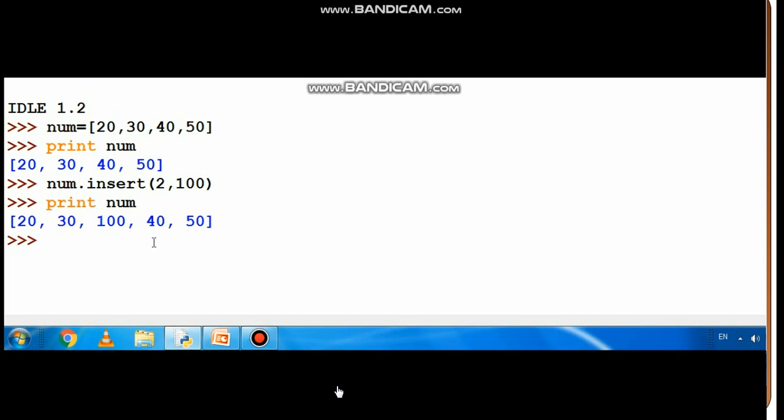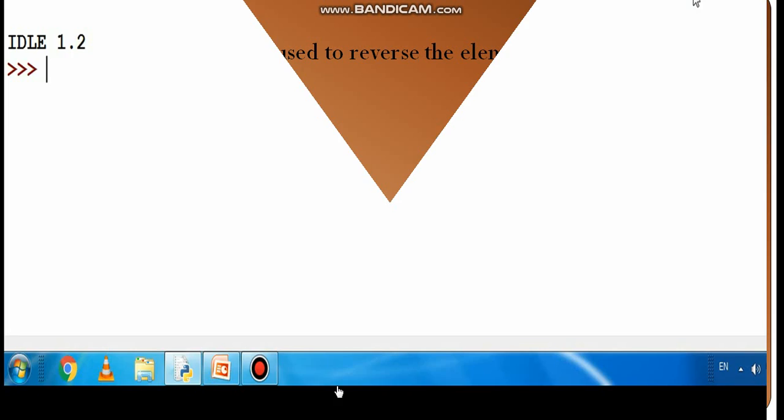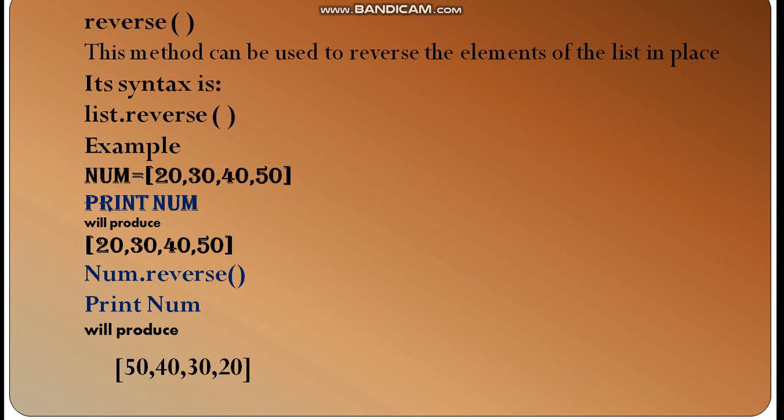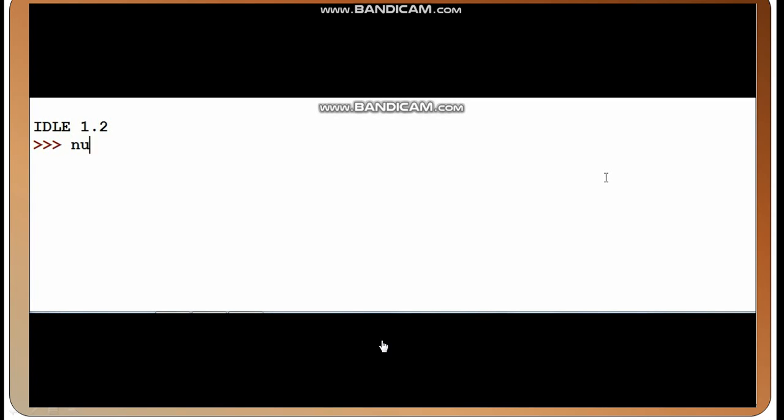Next is reverse. This method can be used to reverse the elements of the list in place. We take a list with values 20, 30, 40, and 50. When we reverse it and print it, it will come in reverse order: first 50, then 40, then 30, then 20. Let's see this through an example. We have a list num with 20, 30, 40, and 50. We print the values to display them. Now we reverse it using num.reverse(), then print num. Now it comes in reverse order.